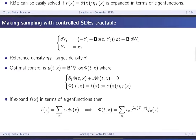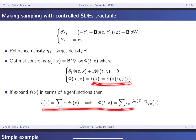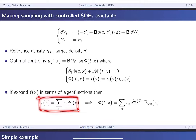To recap: the idea is to make sampling with controlled SDEs tractable. We construct a controlled SDE of the form dYₜ = (-Yₜ + B·u)dt + B·dWₜ with initial condition x₀, along with a given reference density ηₜ and target density π̂. The optimal control is the Doob transform, where φ depends on the solution to the Kolmogorov backward equation. If you expand the density ratio in terms of the eigenfunctions, then by the linearity of the PDE you can get a solution very easily — just take the coefficients and multiply by the exponential factor corresponding to the eigenvalues.